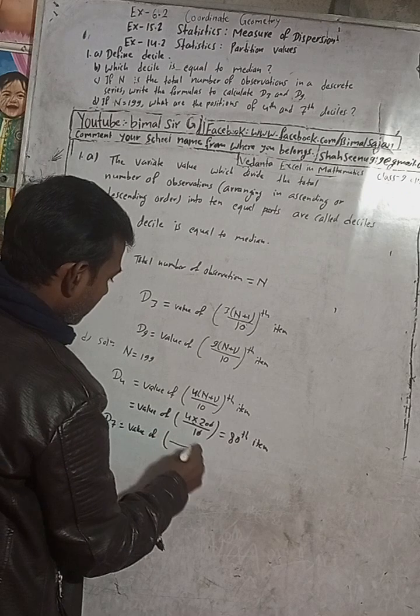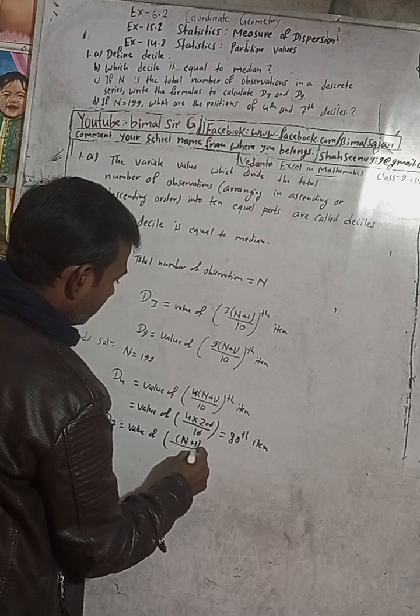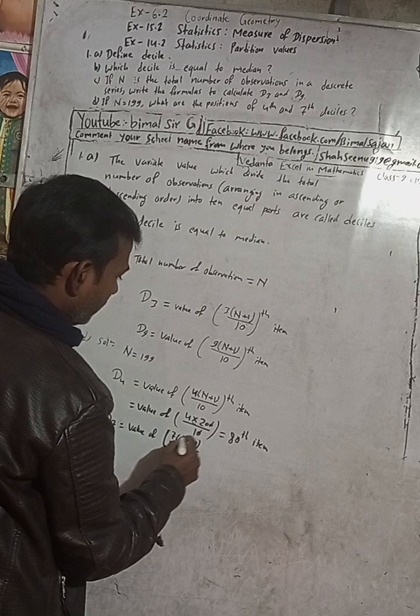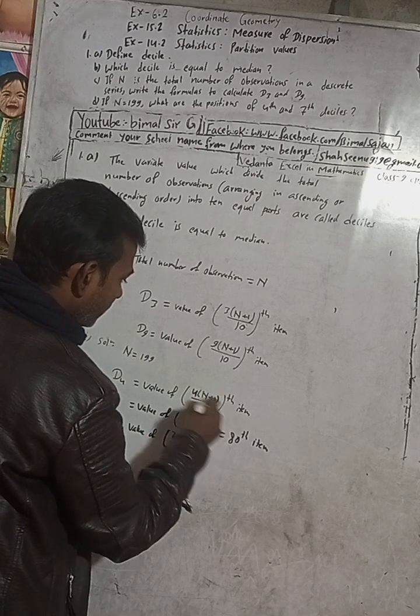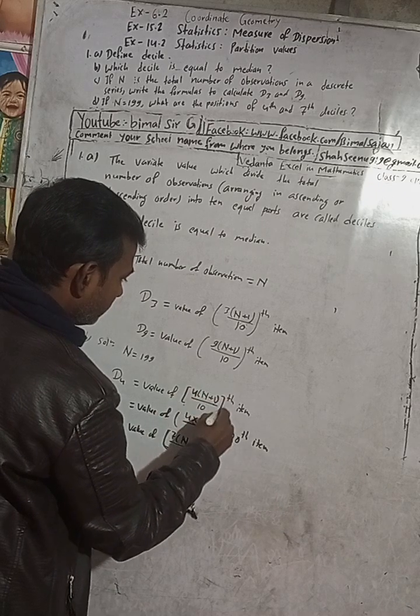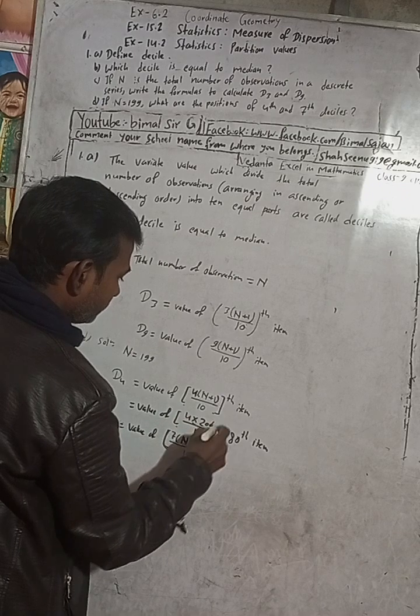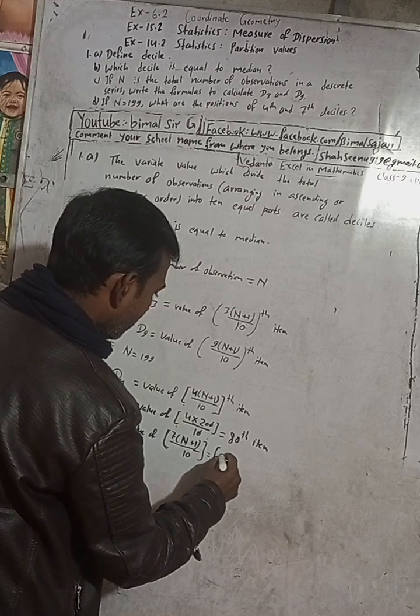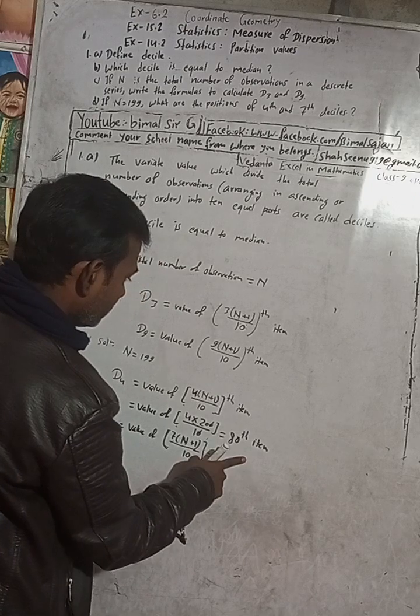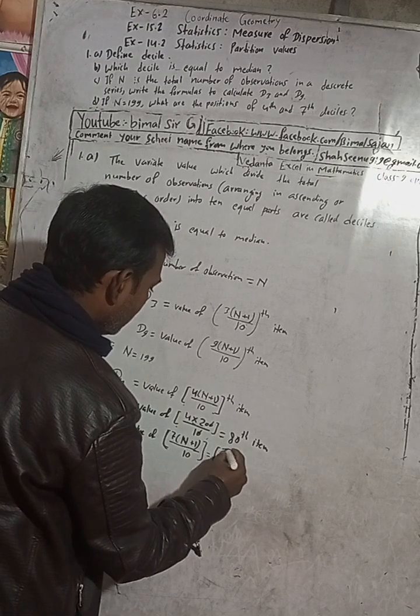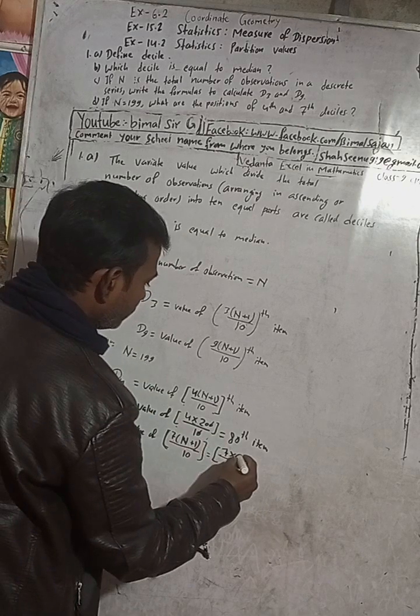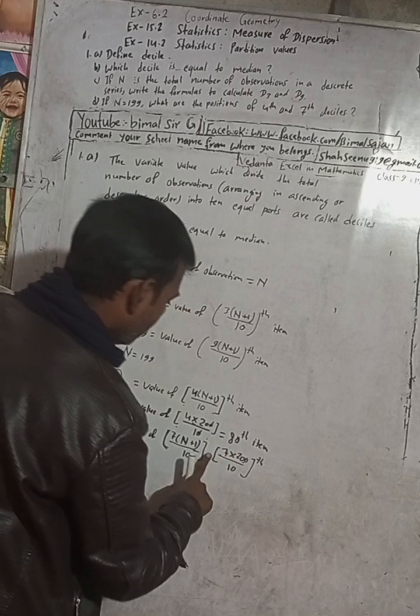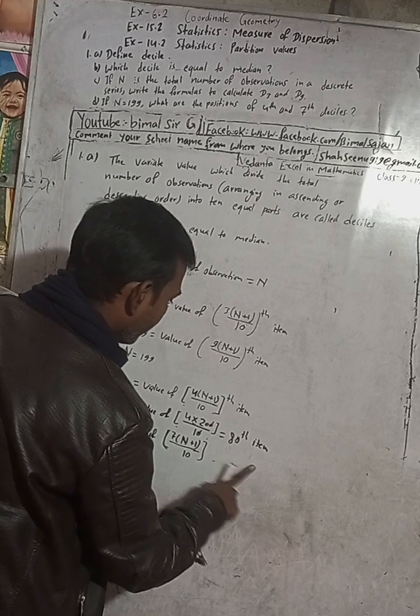So position is 80th. And 7th decile, this 7, so for this same value: value of N plus 1 by 10, and there is 7, multiply with 7 here, and then give a square bracket. For this to differentiate we have to use square bracket. TH item.